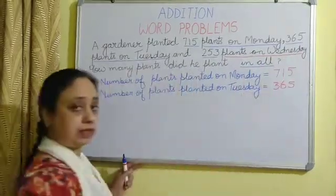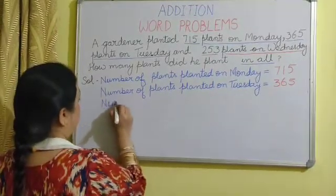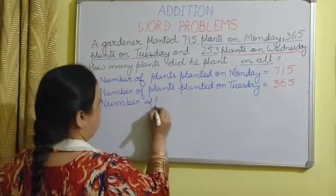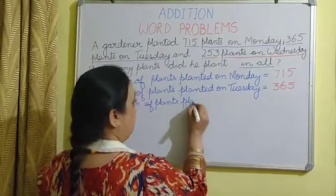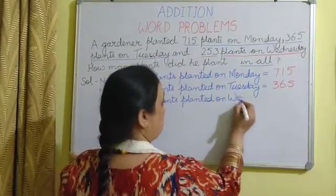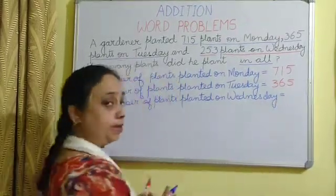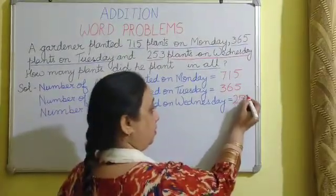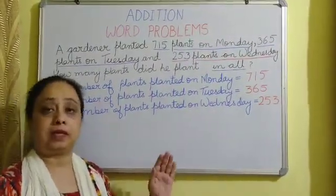The third statement will be: Number of plants planted on Wednesday = 253. Now we have to find out the total number of plants he planted.